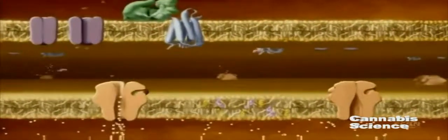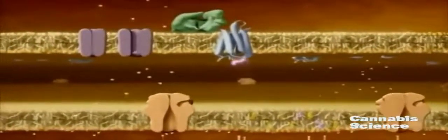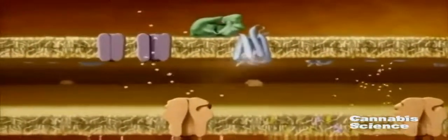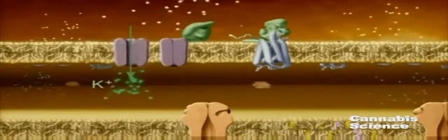Diffusing across the synaptic cleft, the endocannabinoids bind to the CB1 receptor, activating the G-proteins. Activation influences ion flow. The result: suppression of pre-synaptic neurotransmitter release. Endocannabinoids are subsequently taken back into the cell and enzymatically degraded.